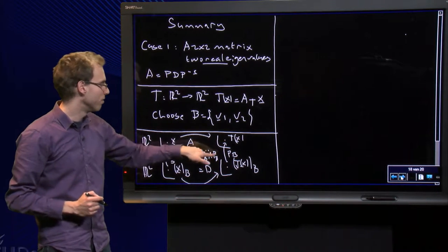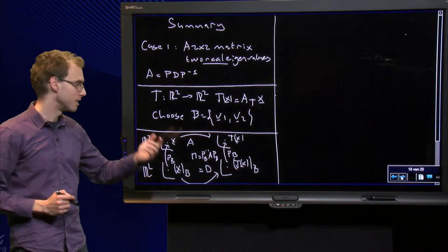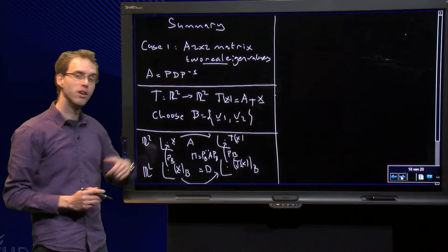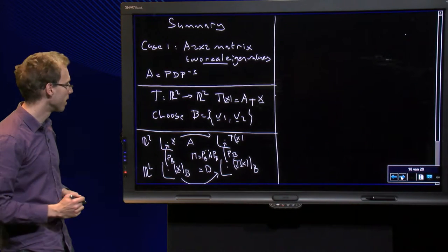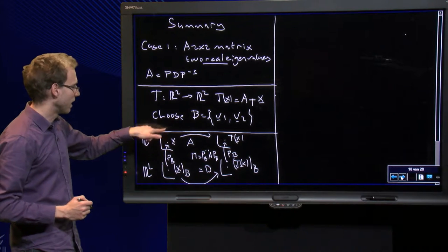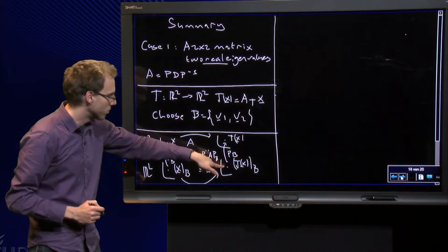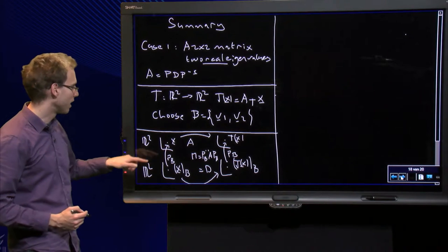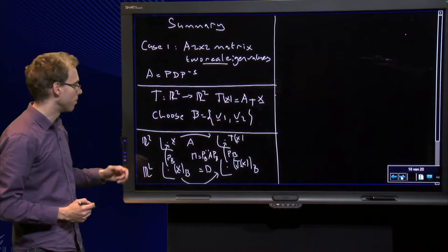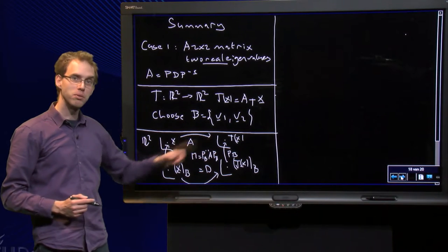We can do the same mapping over here. Going down and up, we need the matrix P to find T if we know T in the basis B. But instead of going from X via X tilde via T tilde to T in the basis B, we can go directly with the matrix M. We know M is P inverse times A times PB.